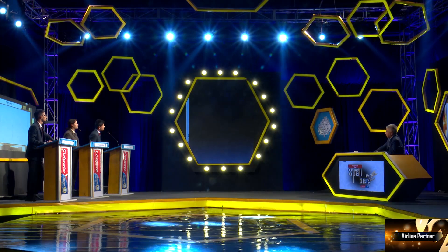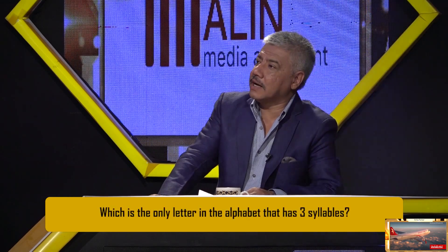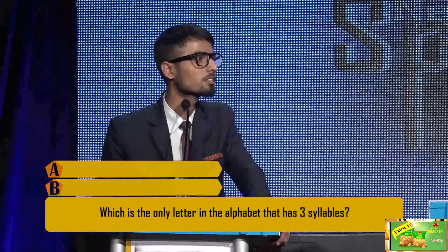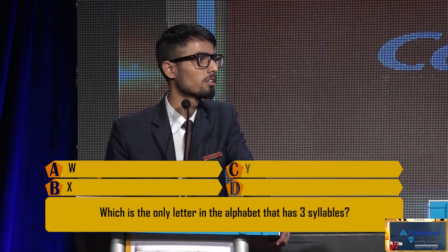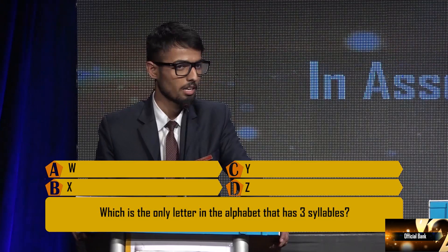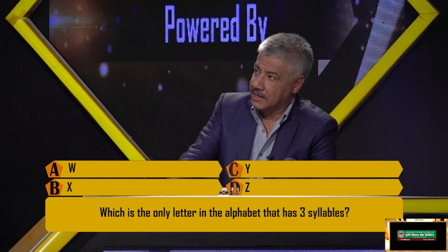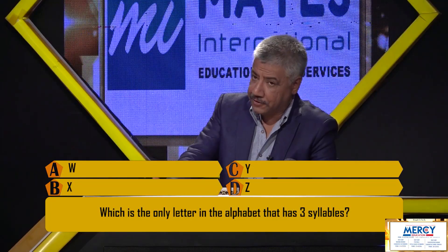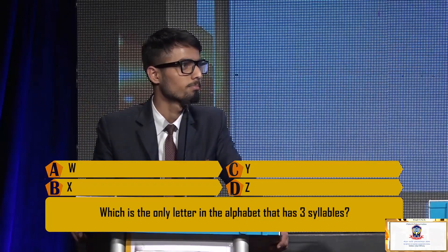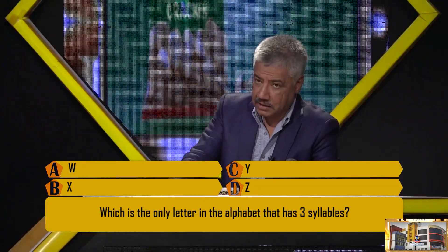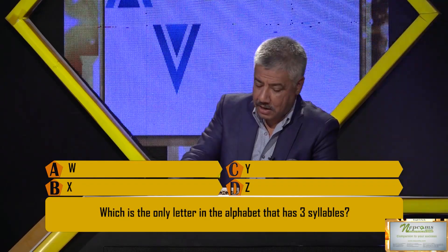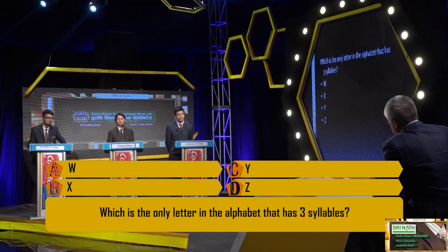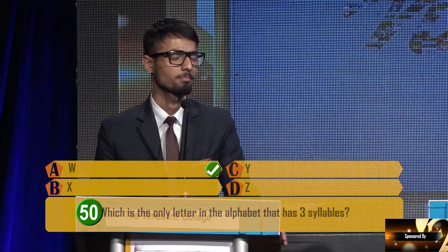Team A, your question on the screen now. Which is the only letter in the alphabet that has three syllables? W, X, Y, or Z? X. That is incorrect — you can have one more go, think and then answer. W. Is that a question or an answer? Answer, sir. W, option A? Are you sure? Yes. That is the correct answer. W has three syllables, while the others have one.